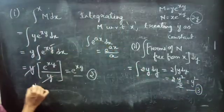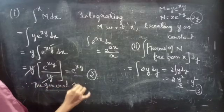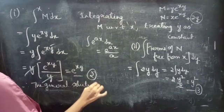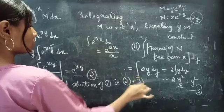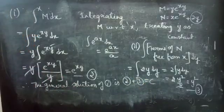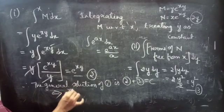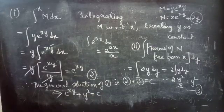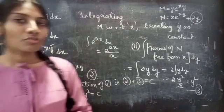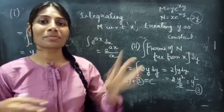The general solution — therefore the general solution is equation 2 plus equation 3 equals constant c. So e^(xy) + y² equals c is the required general solution. We have solved a problem on exact differential equations in this video. Hope you understood. We'll see you in the next video. Until then, bye-bye.